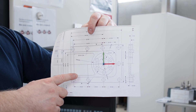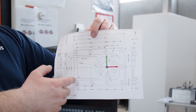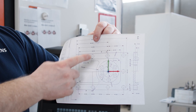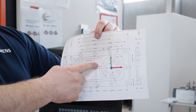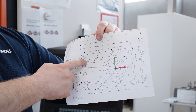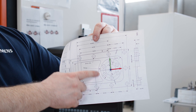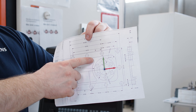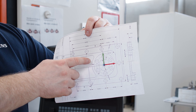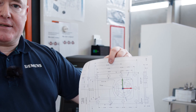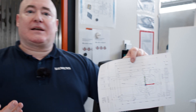Here we have a drawing with a part that has to be manufactured. We are particularly interested in this contour, where the coordinates and intersections are not dimensioned. How can we solve that quickly and easily in practice?